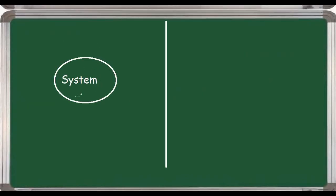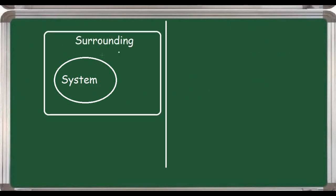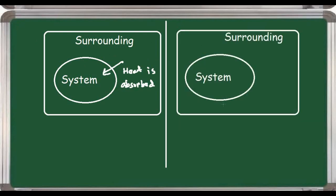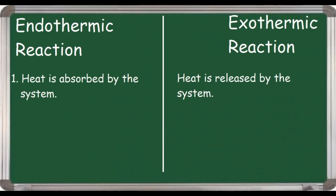Let's consider this as my system, where the reaction is taking place, and I will draw the surrounding as well. For an endothermic reaction, heat is absorbed — the heat flows from the surrounding into the system. For an exothermic reaction, heat is released from the system to the surrounding. I hope the first point is clear after looking at that diagram.